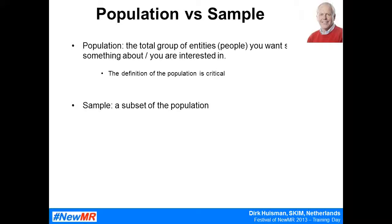If you interview everybody in the population, you call that a census. But interviewing everybody is expensive and not needed. What you normally do is research a subset of the population — a sample. You can compare it with tasting wine: you take a sip, roll it in your mouth and taste it, and it gives you a good impression of the wine in the bottle. So in quantitative research, we describe and draw conclusions about populations by taking a sip — a sample — and analyzing that sample.